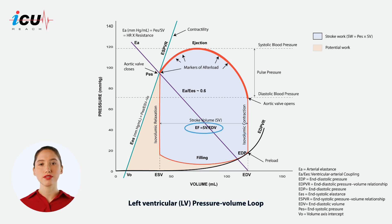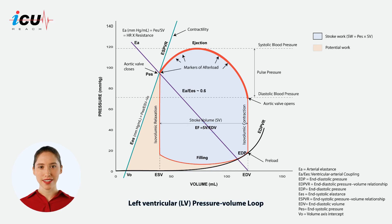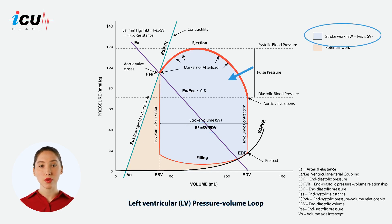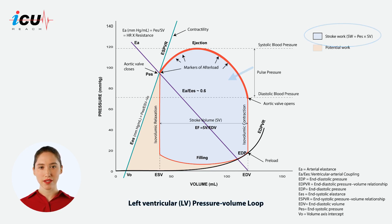The percentage of the stroke volume from the end diastolic volume represents the ejection fraction. The light blue area contained by the loop is a representation of the stroke work of the heart during one cardiac cycle.